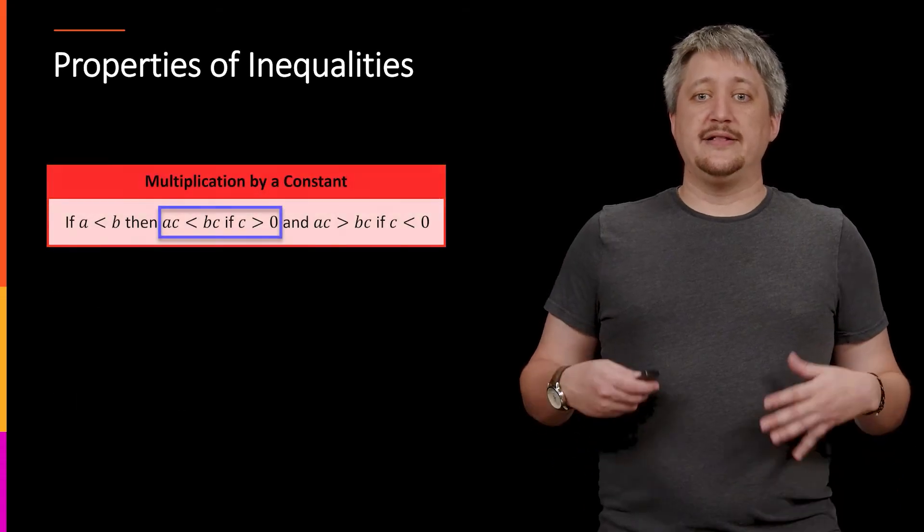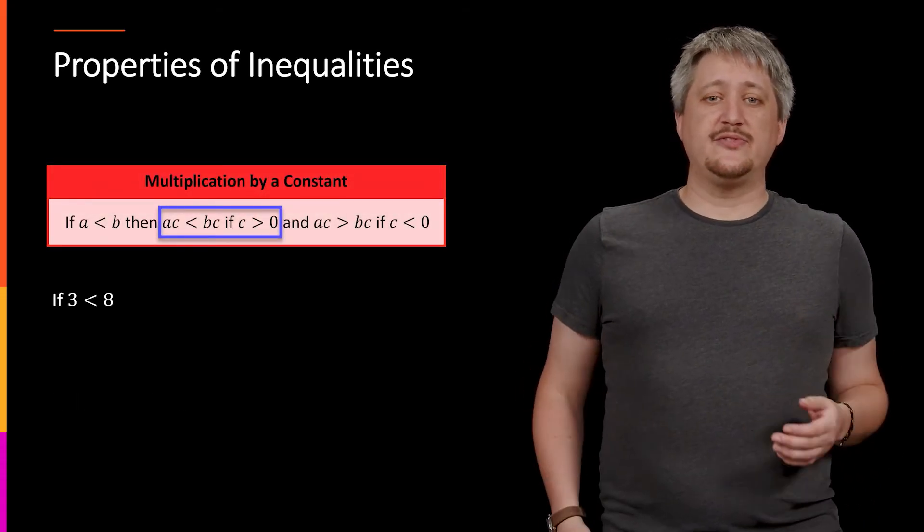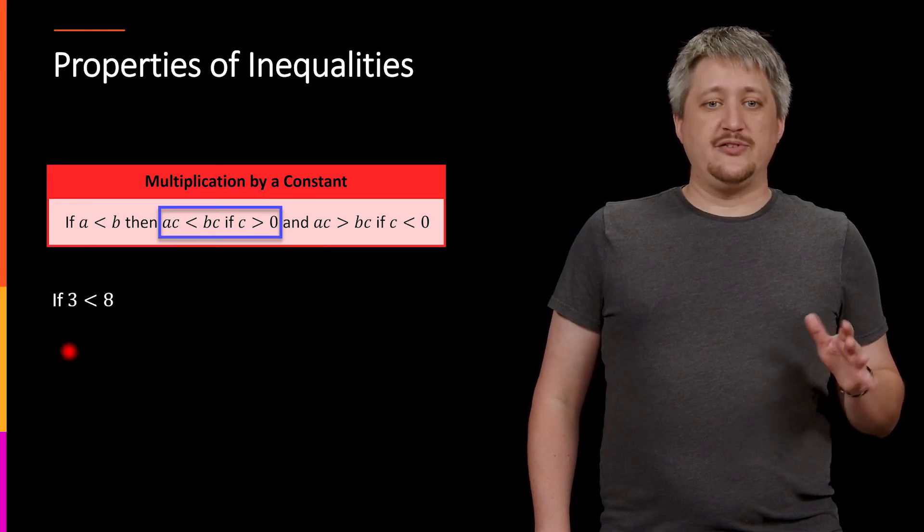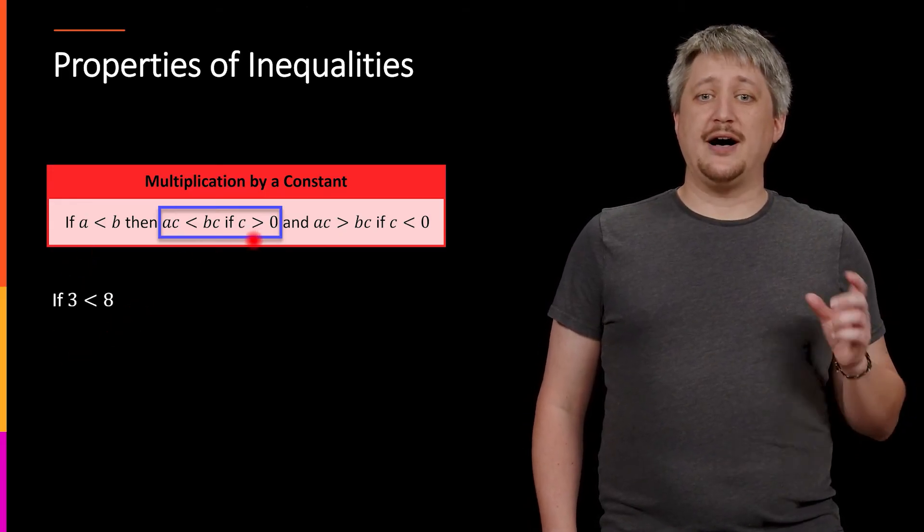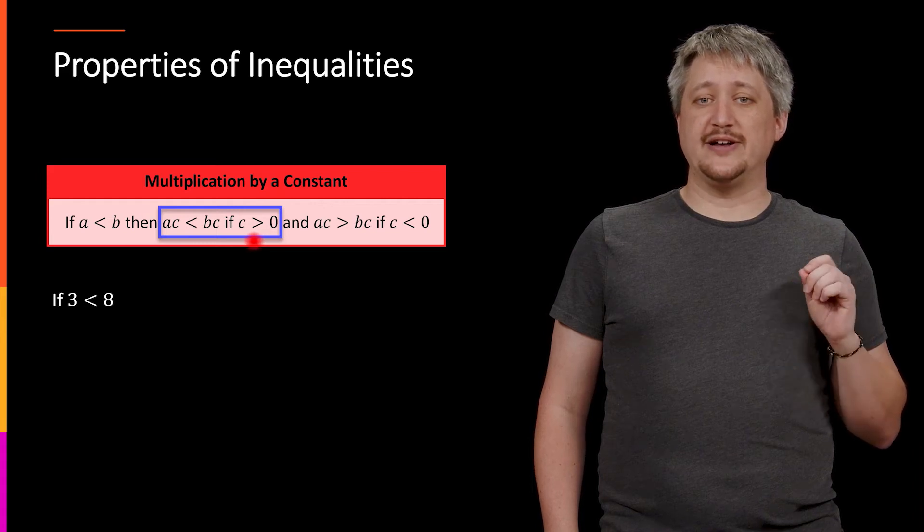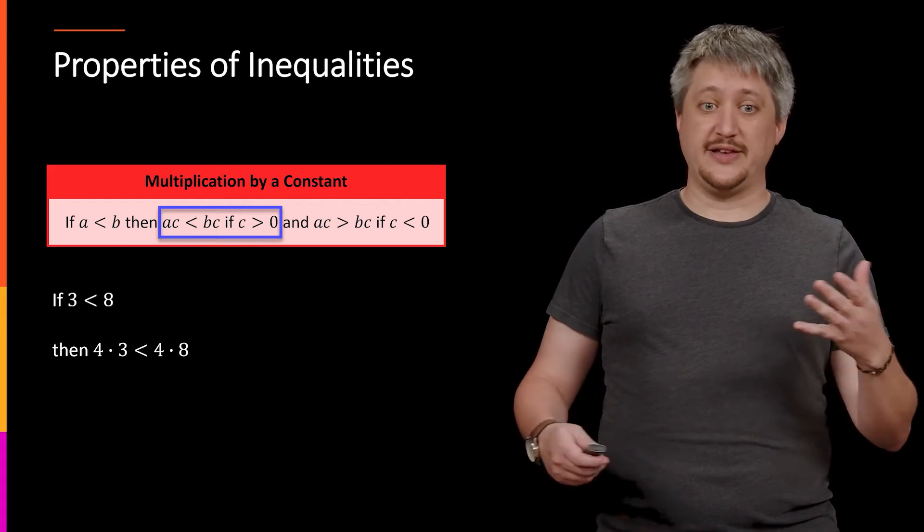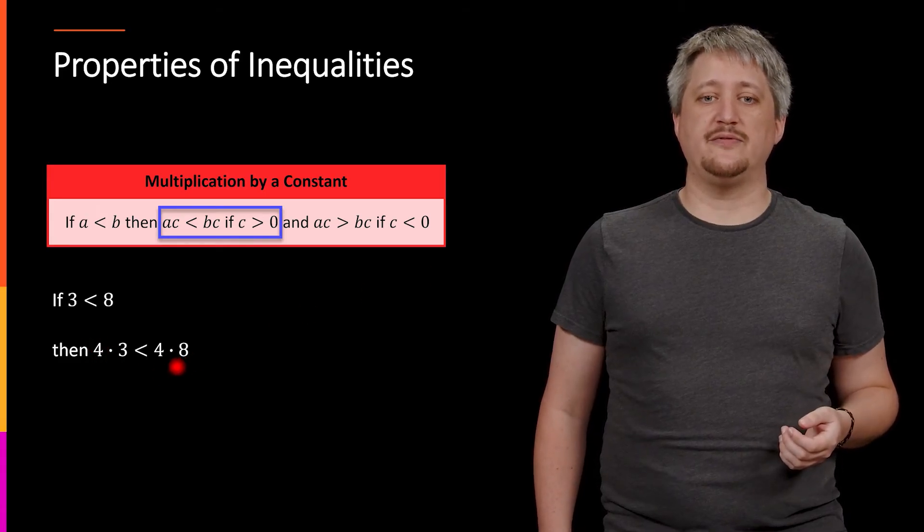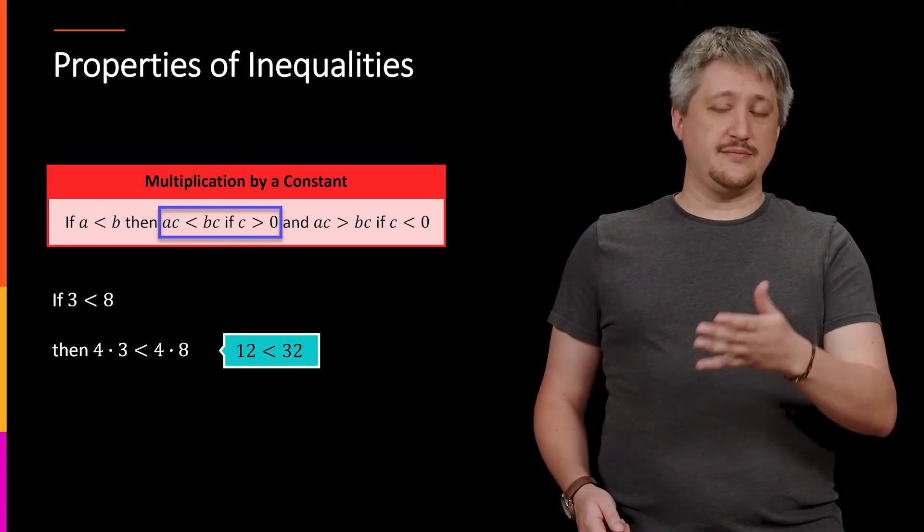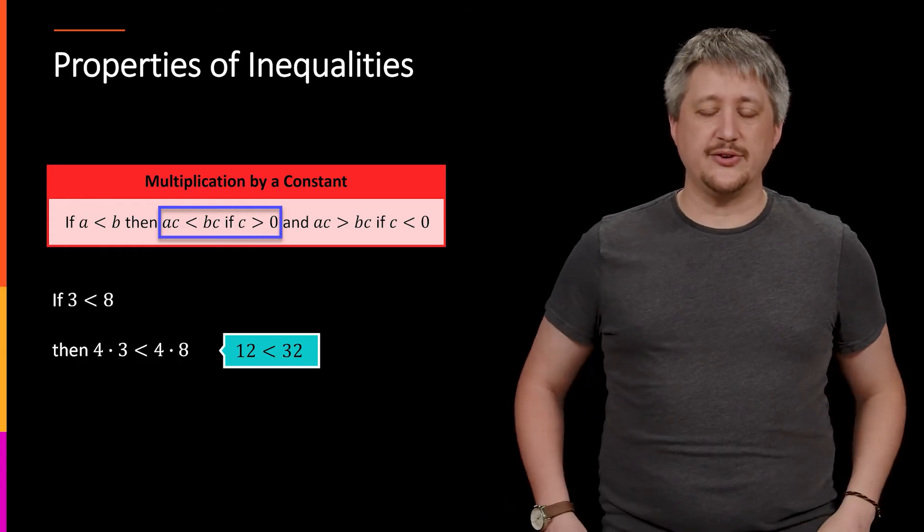And last but not least, multiplying by a constant. So if I have some a less than b, so in this case, if I'm looking at, say, three less than eight, and I want to use some positive thing, I want to multiply both sides by a positive value, like say four. So here I'm multiplying the left by four and the right by four. That doesn't change the inequality. Indeed, 12 is still less than 32.